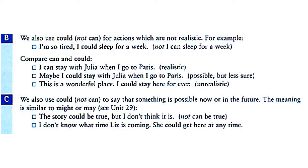We also use 'could,' not 'can,' to say that something is possible now or in the future. The meaning is similar to 'might' or 'may.' For example: 'The story could be true, but I don't think it is.' Here you can't use 'can.' 'I don't know what time Liz is coming — she could get here at any time.' It is possible for her to come at any time.